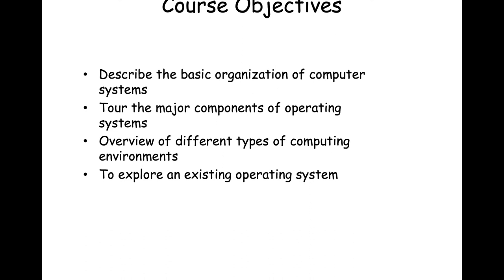Course objectives: describe the organization of computer systems — the operating system in particular — examining all the various components, their designs, the design considerations that go into each, and how their behavior gives rise to certain features in the resulting system. We'll tour all the major components of an operating system, look at different types of computing environments, and explore an existing operating system at a high level.